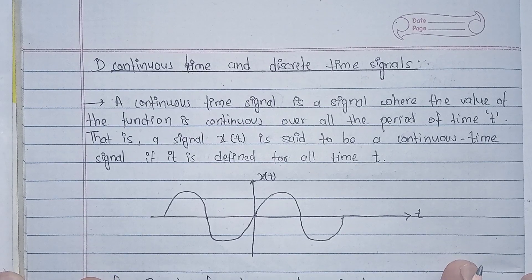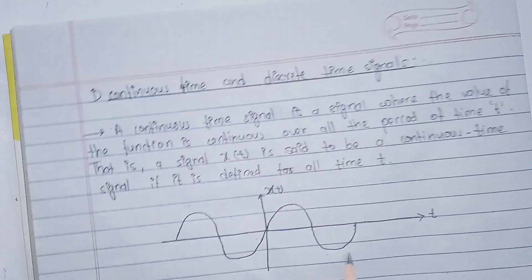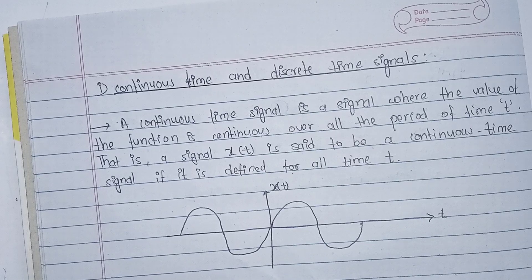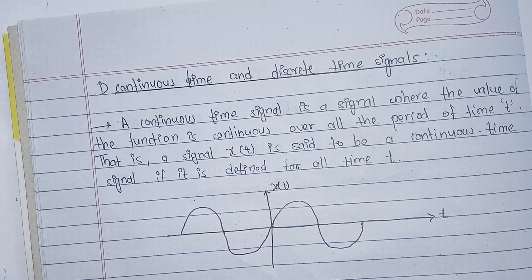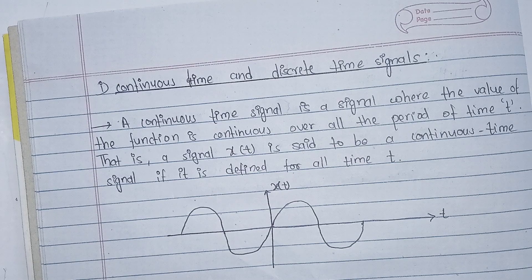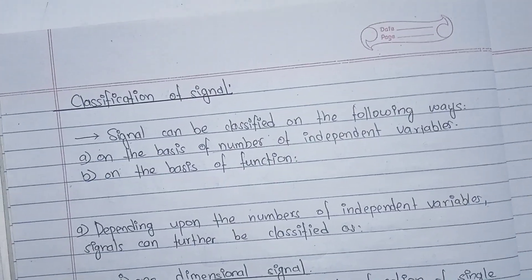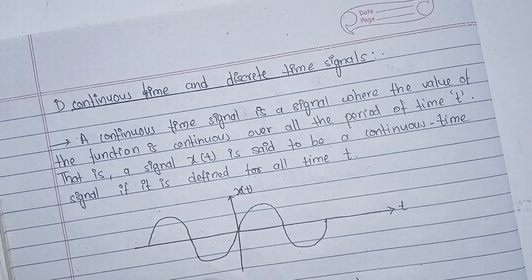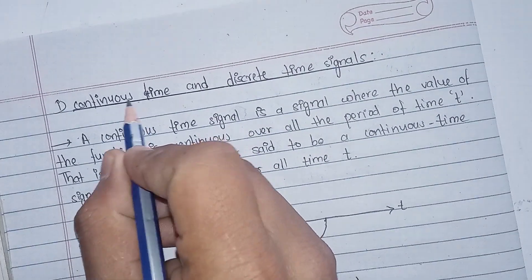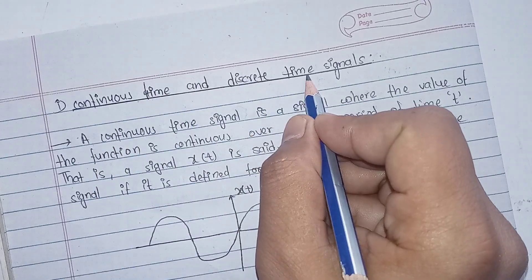Welcome to House of Learners! This signal analysis will be discussed in chapter 1. We have the classification of signals and its definition. In this classification of signals, we have two different signals: the continuous time signal and the discrete time signal.